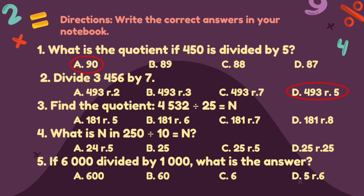The quotient is letter T. Number 3. Number 4 — what is N? The answer is P. And last, number 5.